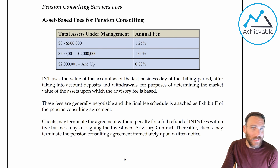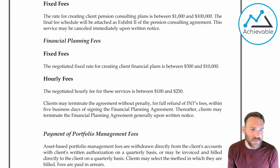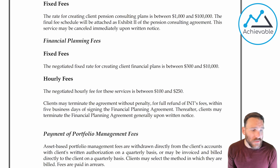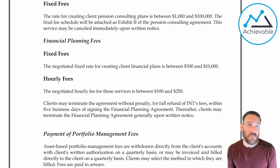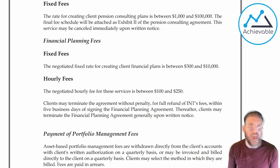Scrolling down, it looks like they charge basically the same fees for pension consulting advice. On the following page, it talks about other fee structures. For financial planning, they have a fixed fee structure — could be anywhere from $300 to $10,000. Hourly fees are another structure, and it seems like they charge anywhere between $100 and $250 per hour. These fees might seem high if you've never hired a professional like a lawyer or advisor, but they're pretty reasonable for this part of the industry.